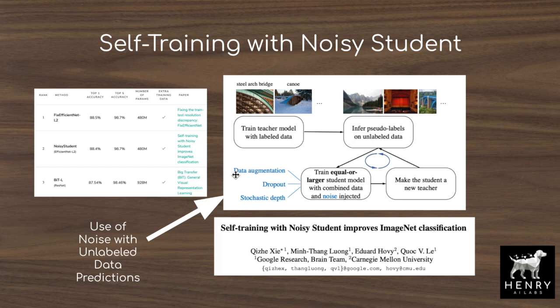This noise can take the form of data augmentations like rotations, translations, or color alterations applied to the unlabeled images, or applying dropout in the model, or stochastic depth, where you drop out an entire path of the network. This noise is integrated with prediction on the unlabeled data to add robustness and more signal when applying pseudo-labels, then the pseudo-labeled dataset is stacked with the labeled data to train the next iteration of the model.